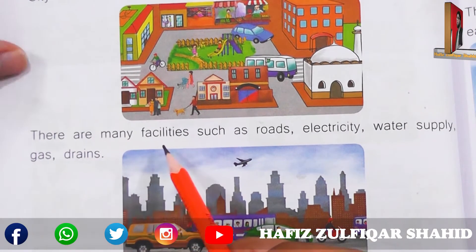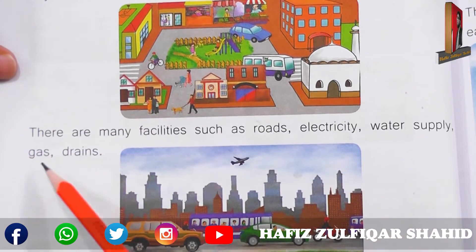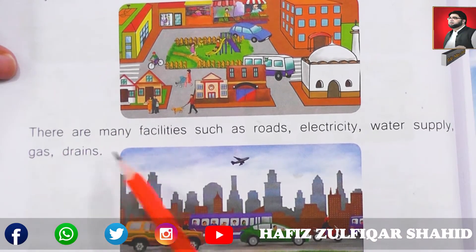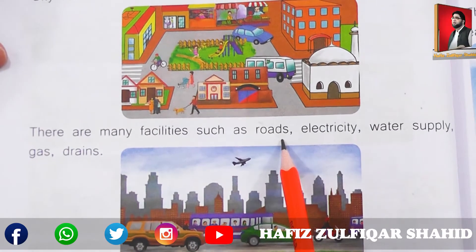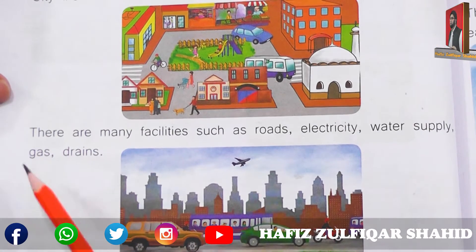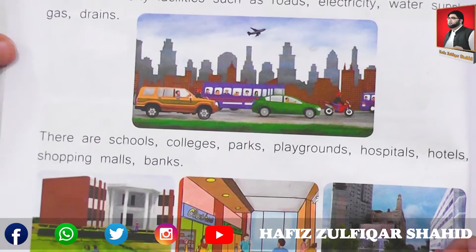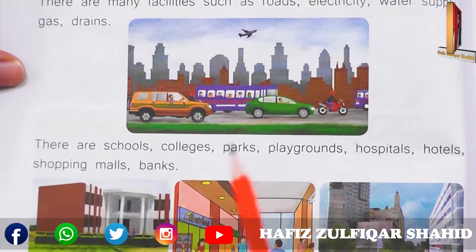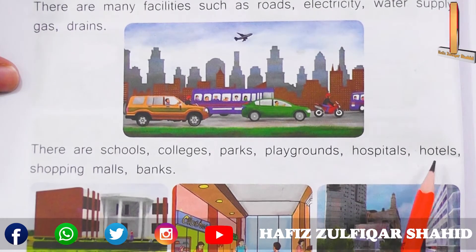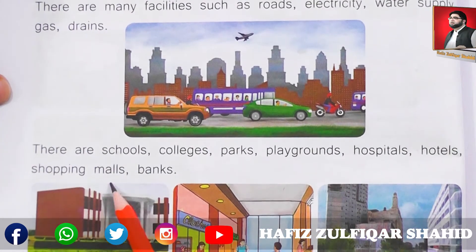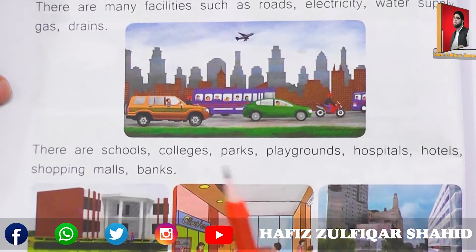There are many facilities such as roads, electricity, water supply, gas, and drains — yahaan par bahut si qisam ki sahuliyaat maujood hoti hain: sadkein, bijli, paani ki supply, gas aur naaliyaan. There are schools, colleges, parks, playgrounds, hospitals, hotels, shopping malls, and banks — yeh sab kuch shahar mein maujood hota hai.